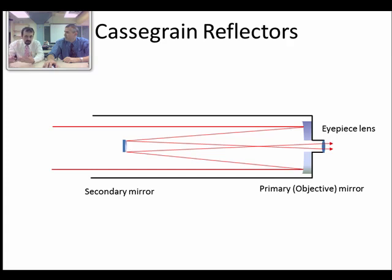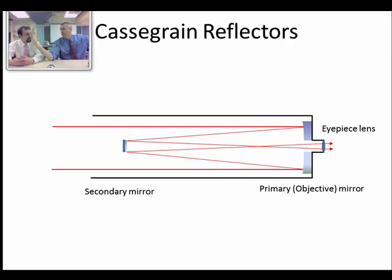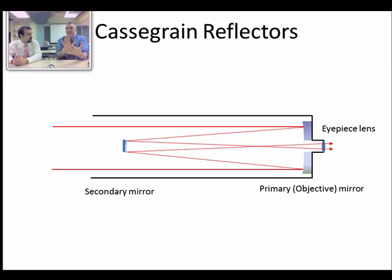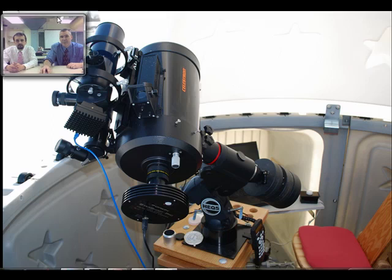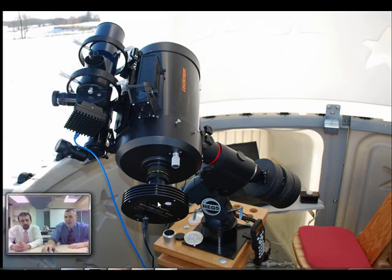The advantage of mirrors over lenses is that very large lenses become impractical — the world's largest refractor has a 40-inch lens that's over a meter in diameter, so heavy it sags under its own weight and distorts the image. A mirror only reflects off the front surface, so you can make a much more sturdy slab of glass and support it from underneath. Here's an amateur astronomy Cassegrain reflector telescope.